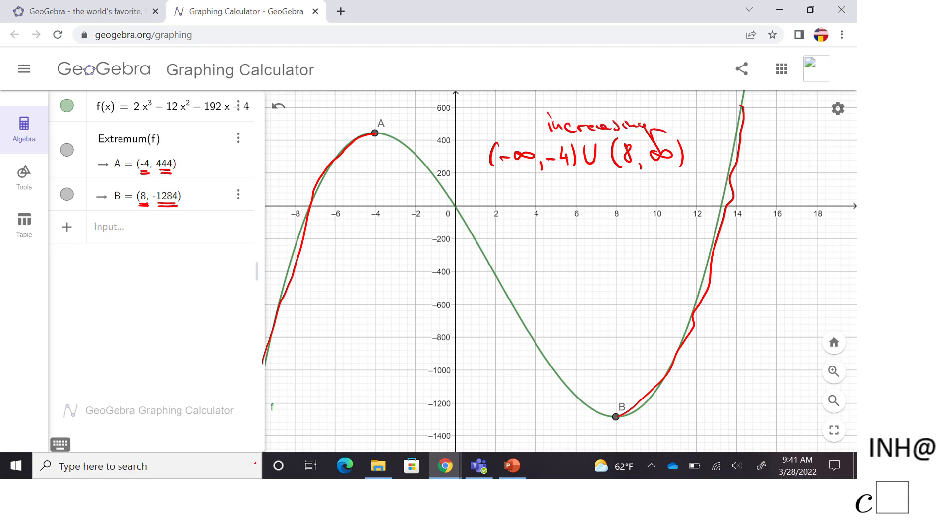Similarly we can see on this picture where the function is decreasing, and that happens right here. The function is going down from left to right and that starts from negative 4 to 8. The function is decreasing. If you have more than one interval use again the union sign.